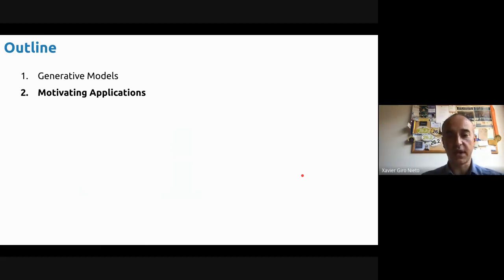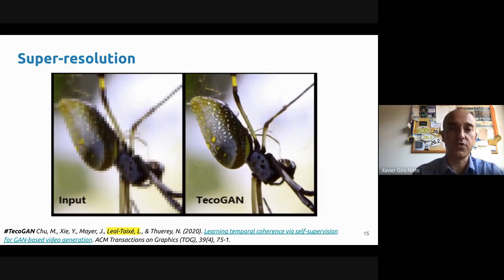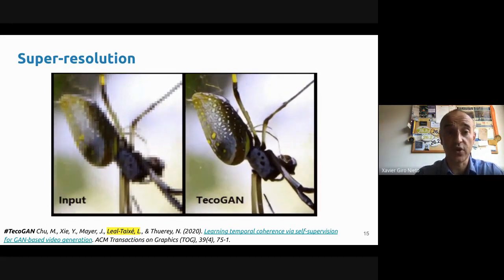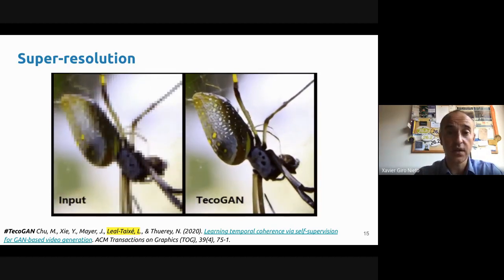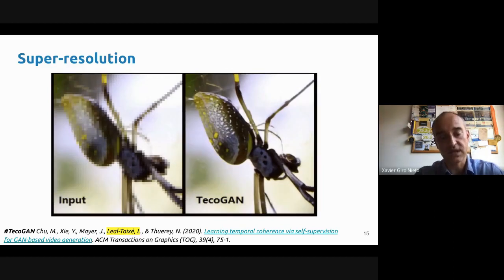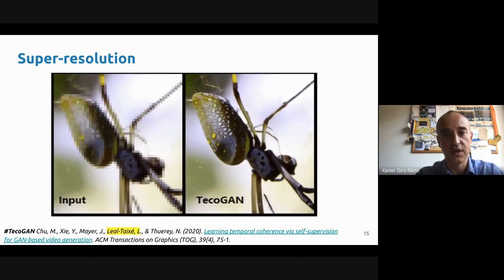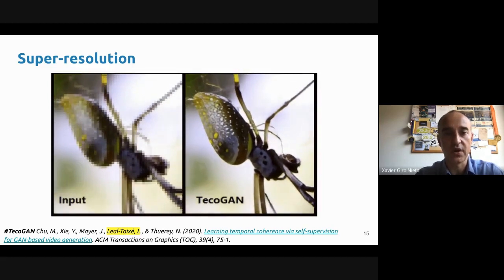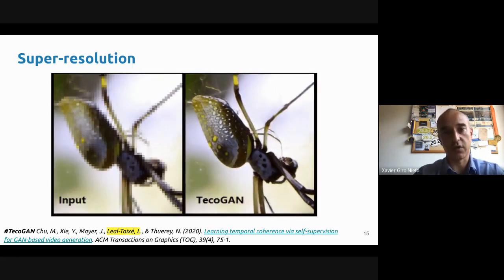Let's look at some motivating applications. One application could be super resolution. Imagine you have an image or video in low spatial resolution — that's the input on the left. On the right, you have the output of a GAN-based model that has interpolated the missing pixels in a much better way than linear interpolation would do. A lot of detail has been added based on a previous learning process. This work was co-authored by Laura Leal, who was a former student from our university at UPC.